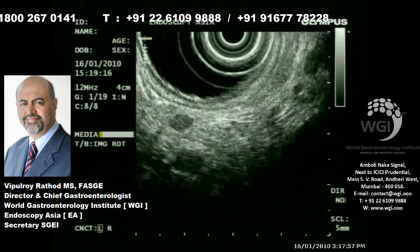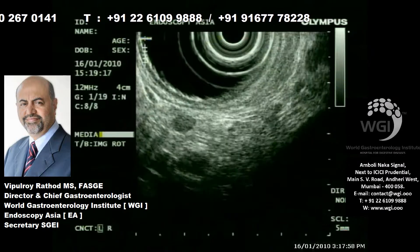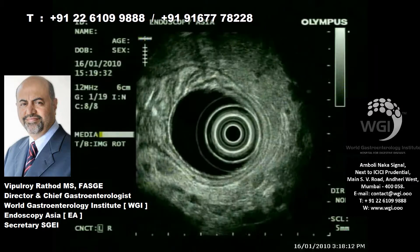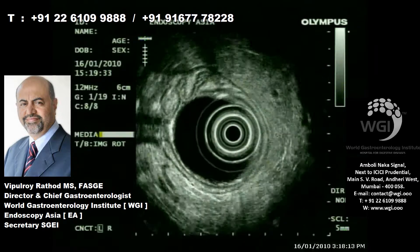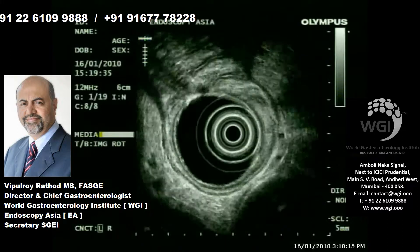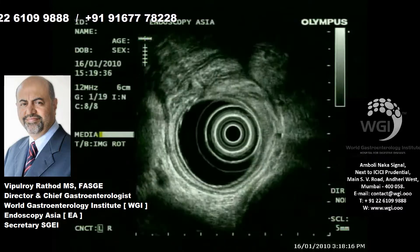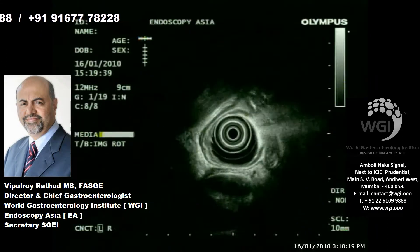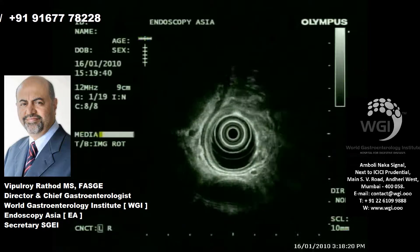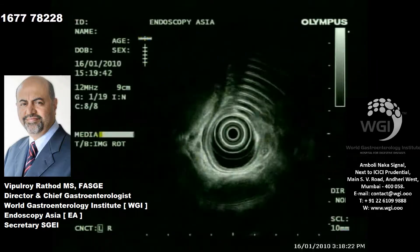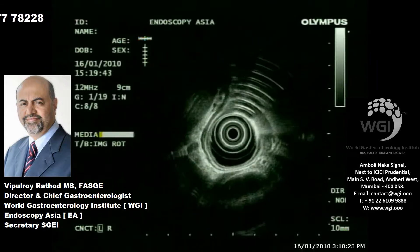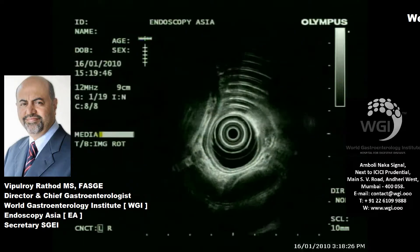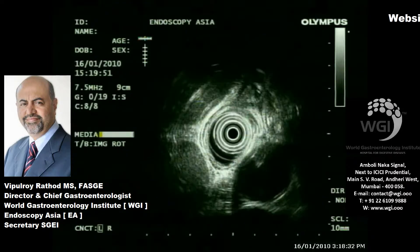In our experience, even a 5 mm node — we have done FNA and they turn out to be metastatic. This is the new thinking, and I personally reckon that the world will have to follow this perhaps in times to come, when more centers start doing EUS routinely for all pancreaticobiliary cancers worldwide.